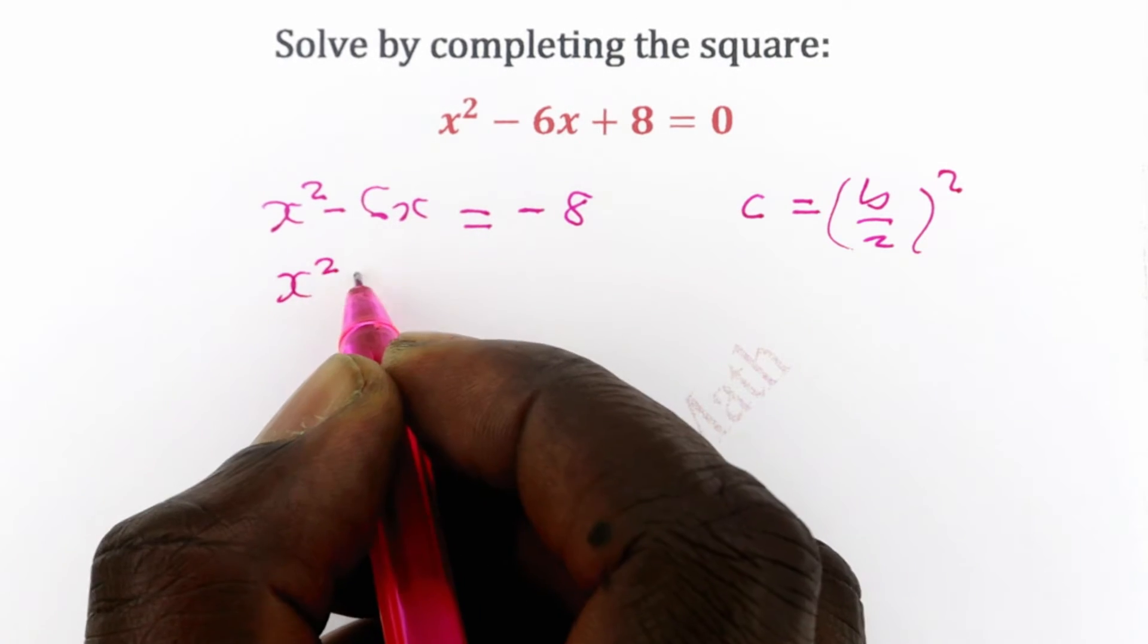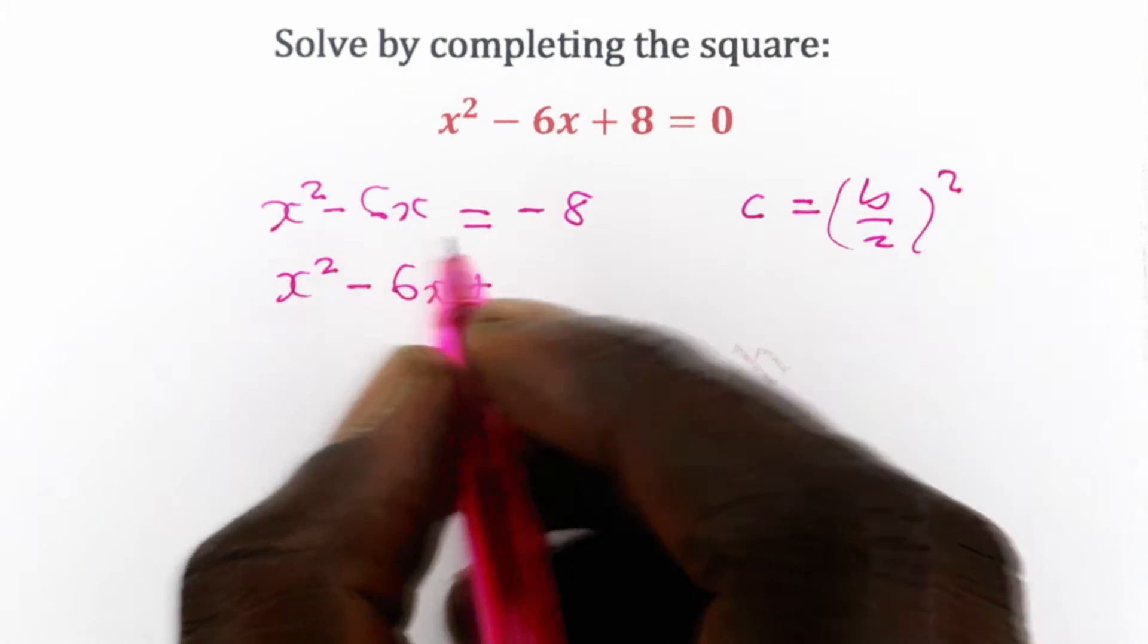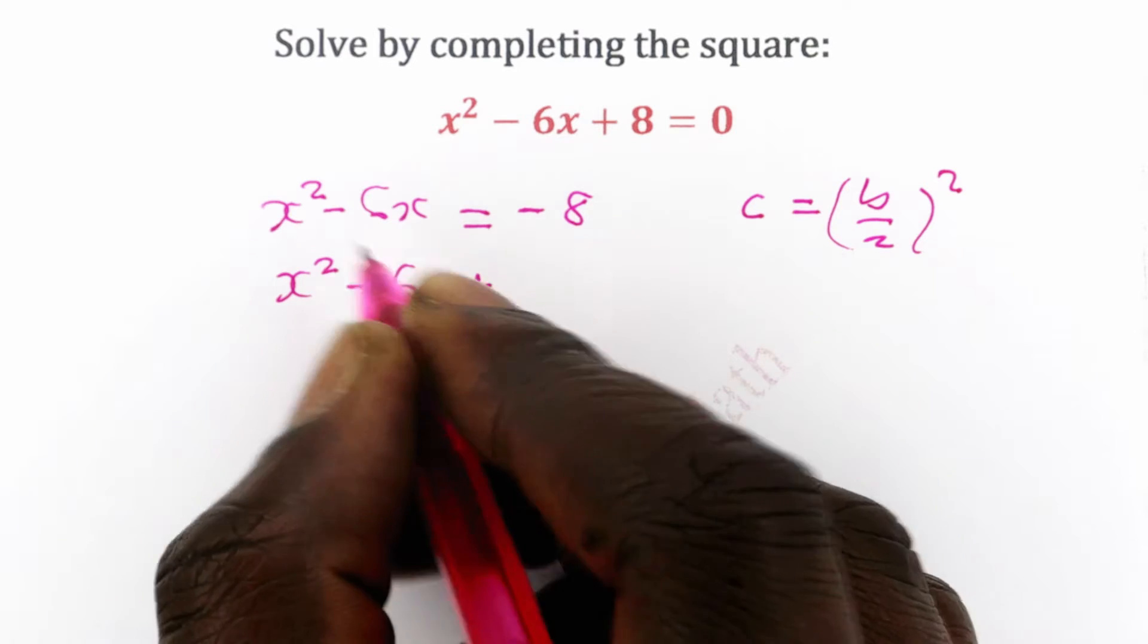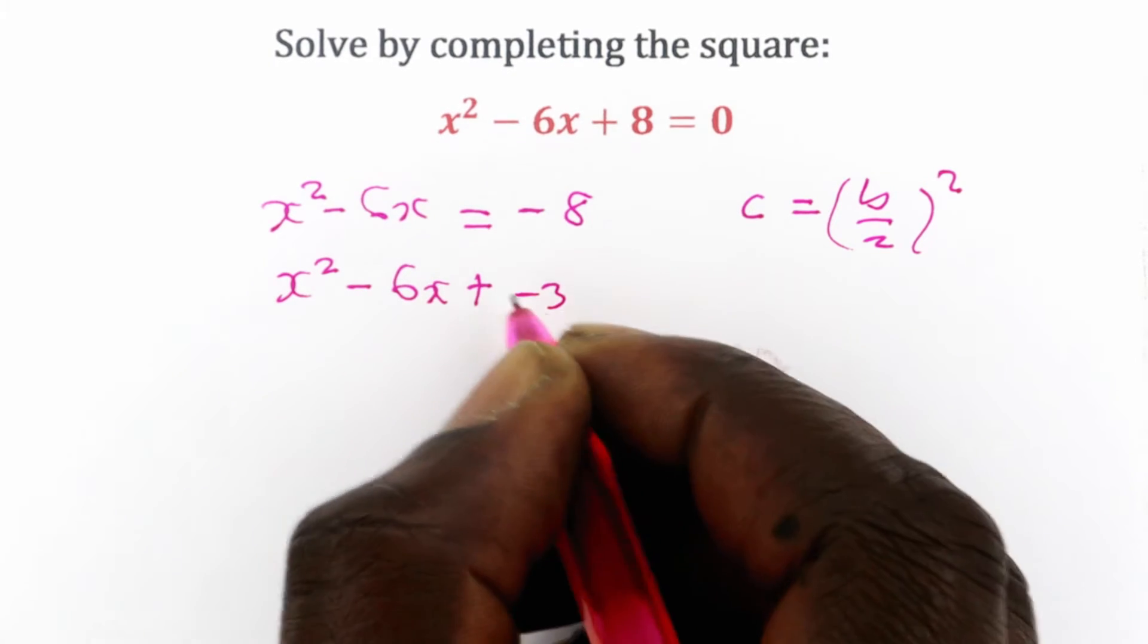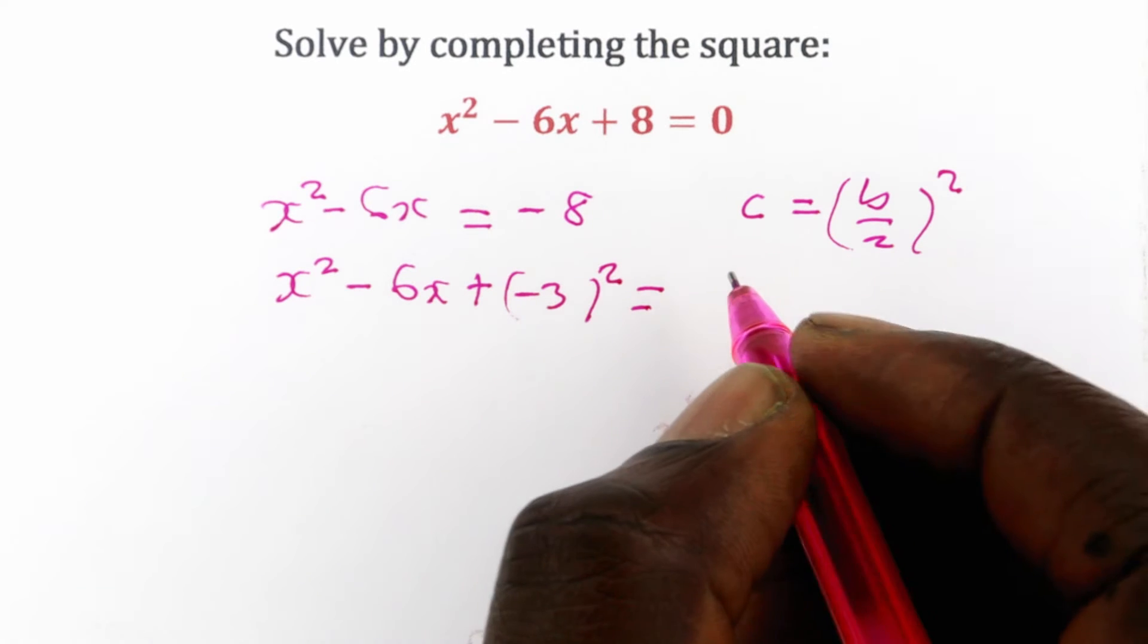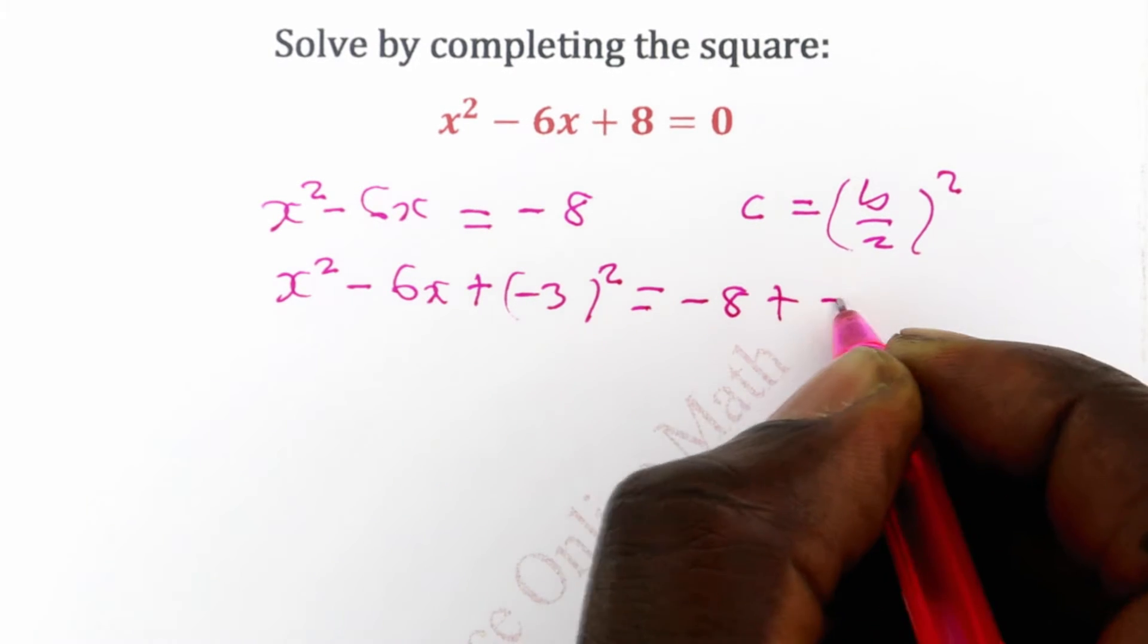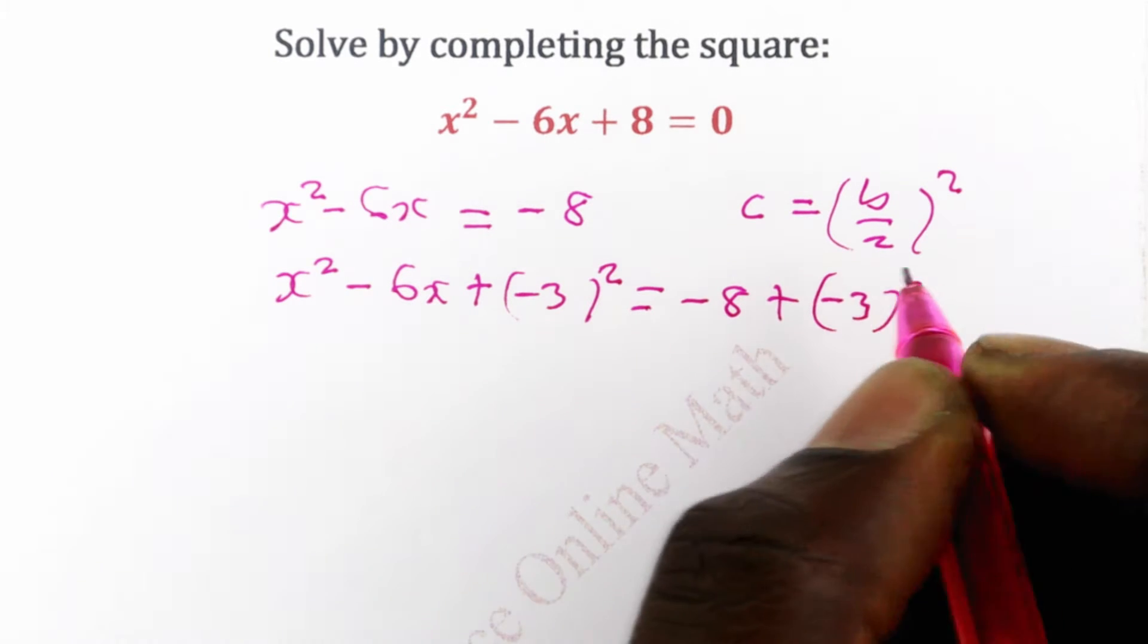So we are going to do that: x squared minus 6x plus c which will be half of b squared. And half of b will be negative 3. And you square that. And for balance you do that to the right hand side too. So minus 8 plus negative 3 squared.